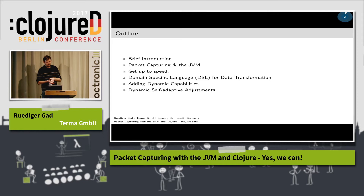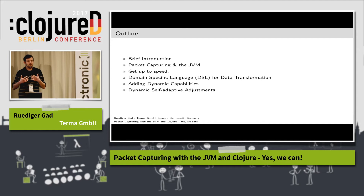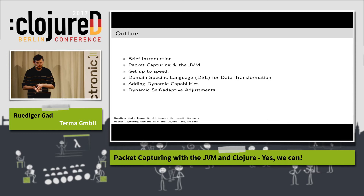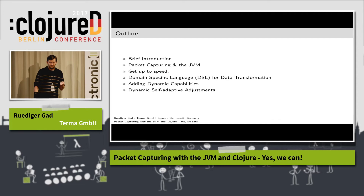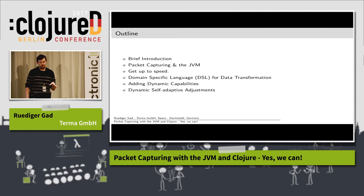To give a rough outline: first I'll provide a brief introduction about the background and scope of this work. Then I'll cover packet capturing and the JVM, including things that need to be taken into account. Then I'll explain how to improve speed with packet capturing — the talk is 'packet capturing with the JVM and Clojure, yes we can' — implying not only that it's technically possible but that we can do it efficiently and with reasonable speed. Afterwards I'll show a domain-specific language for data transformation, dynamic capabilities, and dynamic self-adaptive adjustments.